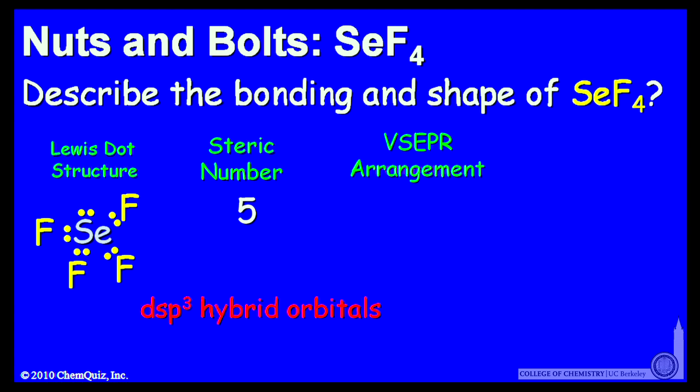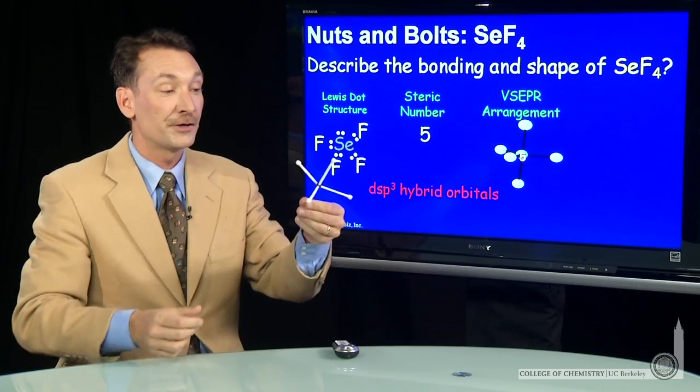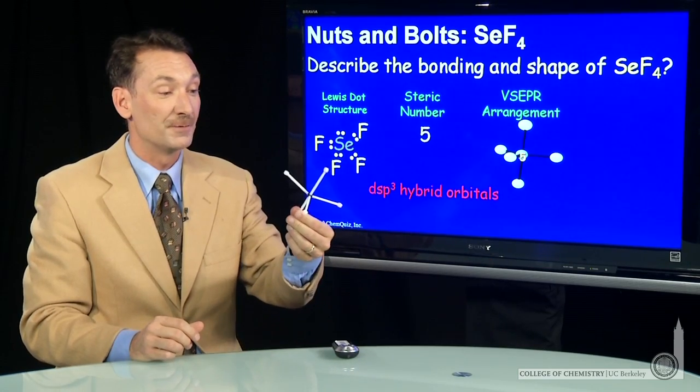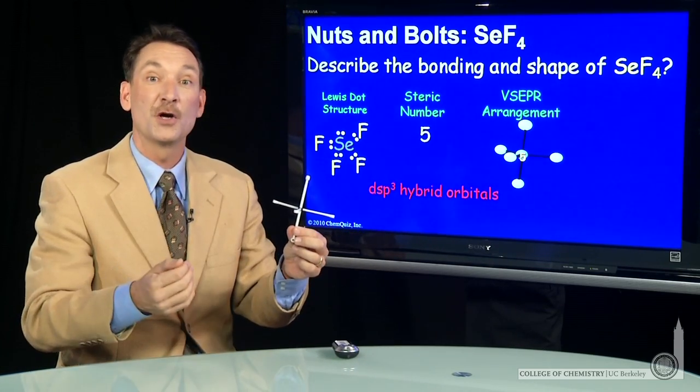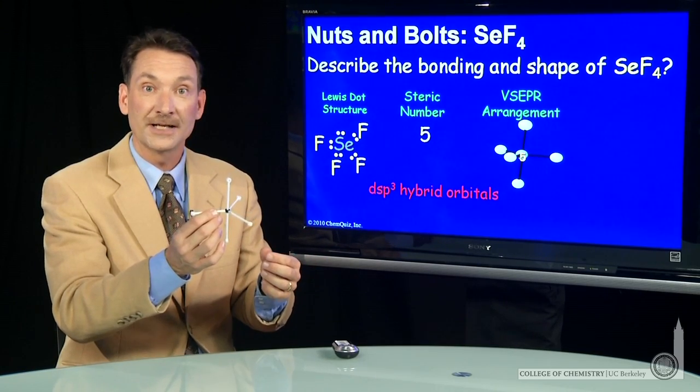The VSEPR arrangement for five things is trigonal bipyramidal. It looks like this. So our trigonal bipyramidal arrangement, but in this case, when we go to the molecular shape, we ignore electron pairs.